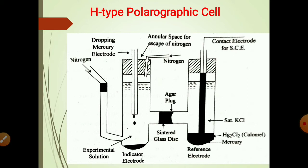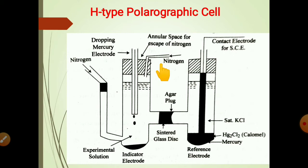filled with 4% agar-saturated KCl gel, which is held in place by a porous sintered glass disc. Nitrogen gas can be bubbled through the experimental solution — that is, inert nitrogen passes into the experimental solution through a side inlet to remove the dissolved oxygen from the solution. Initially, the solution arm is filled with the experimental solution, followed by nitrogen gas passed through it to remove the oxygen.